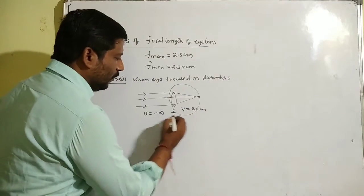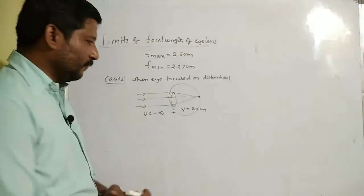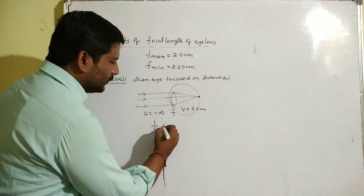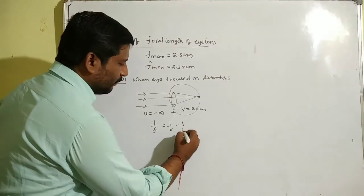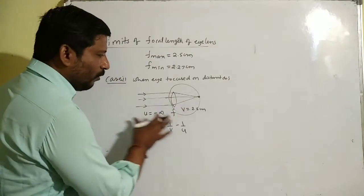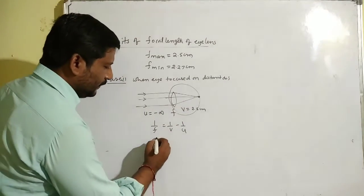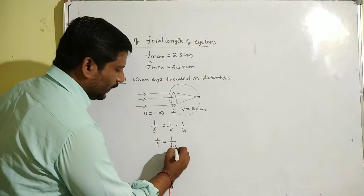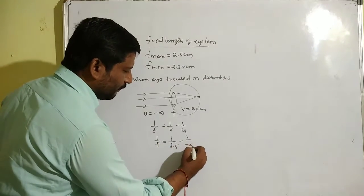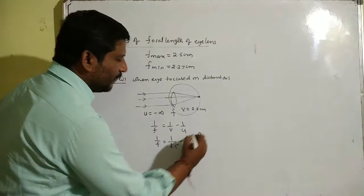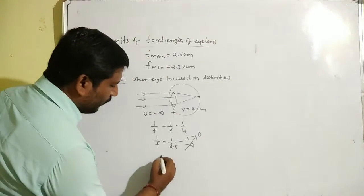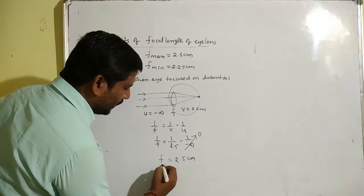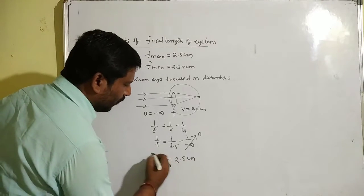Let us find the focal length of the eye lens using the lens formula: 1/f = 1/v − 1/u. Substituting all values: 1/f = 1/2.5 − 1/(−∞). Since something divided by infinity equals 0, therefore f equals 2.5 cm, and this is the maximum focal length of the eye lens.